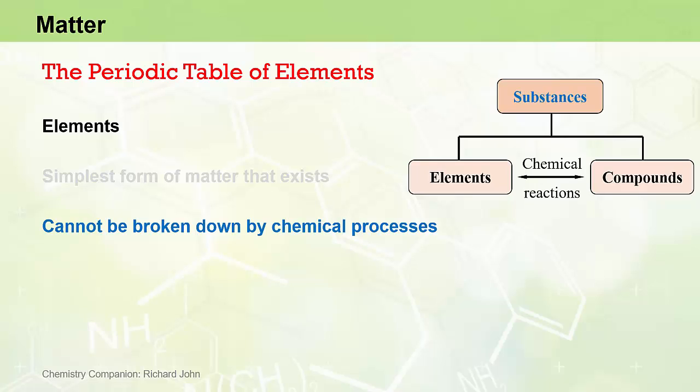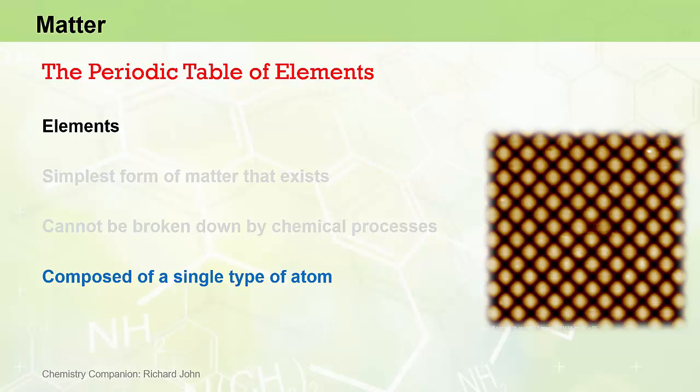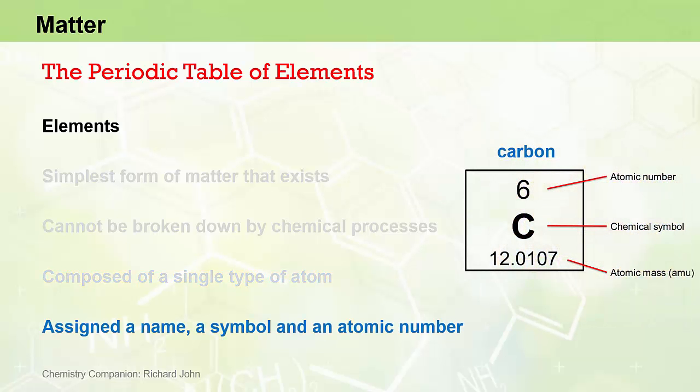They are the building blocks of matter since two or more elements can combine via chemical reactions to form literally millions and millions of different compounds. They are composed of only a single type of atom and each atom or element is assigned a name, a symbol and a number. And the atoms of an element also have their own characteristic mass, known as the atomic mass.